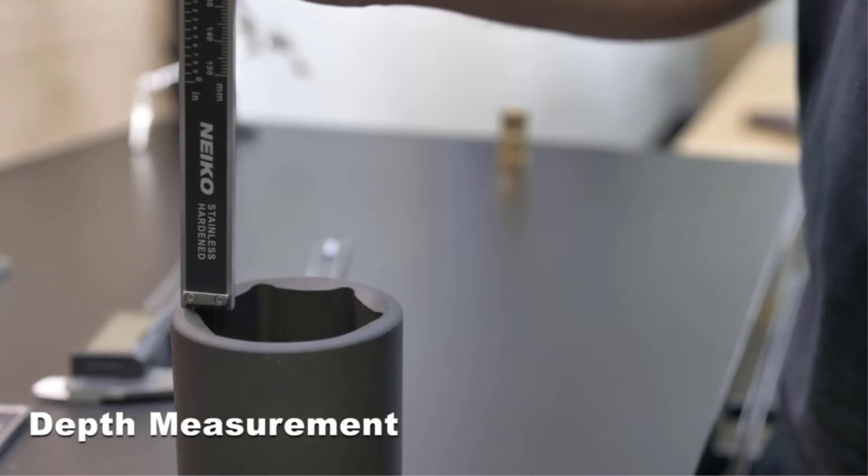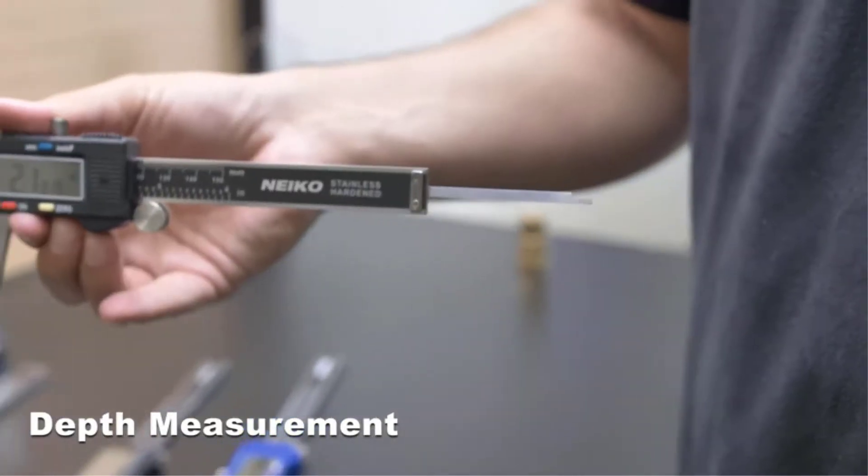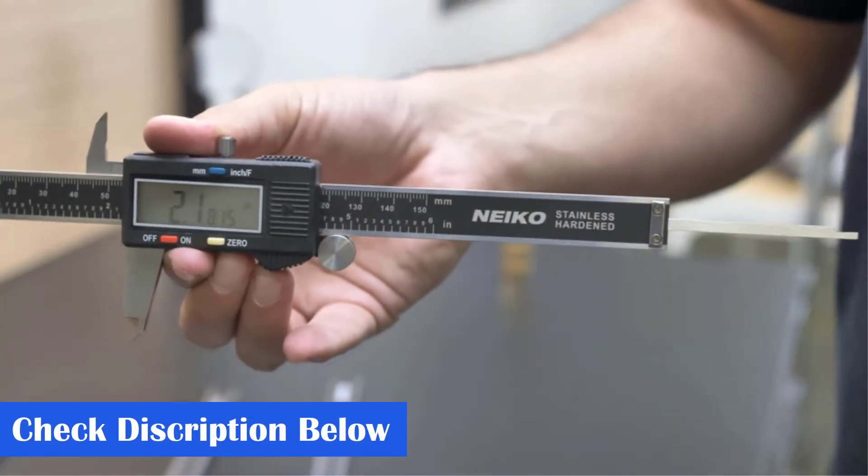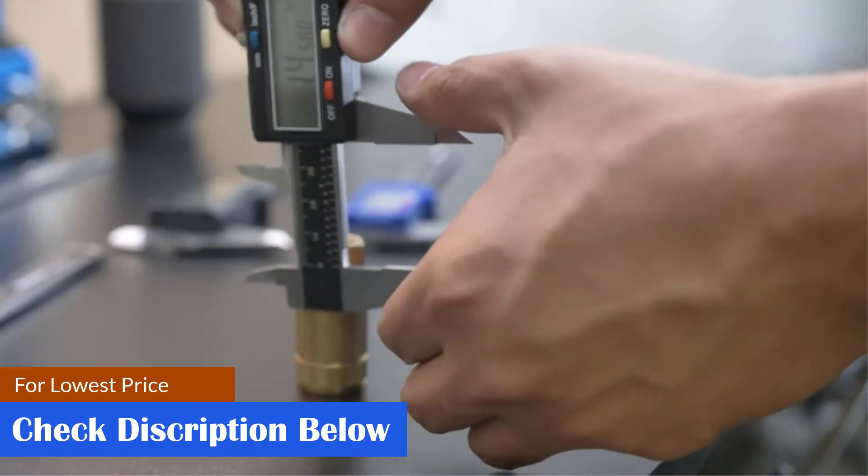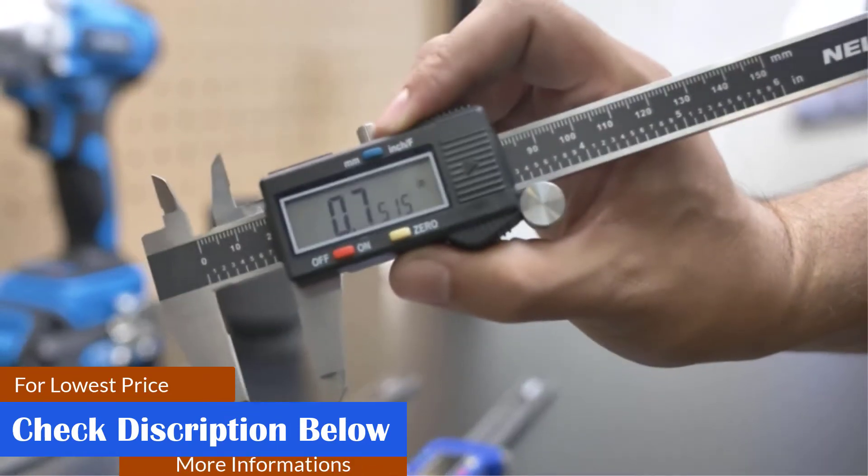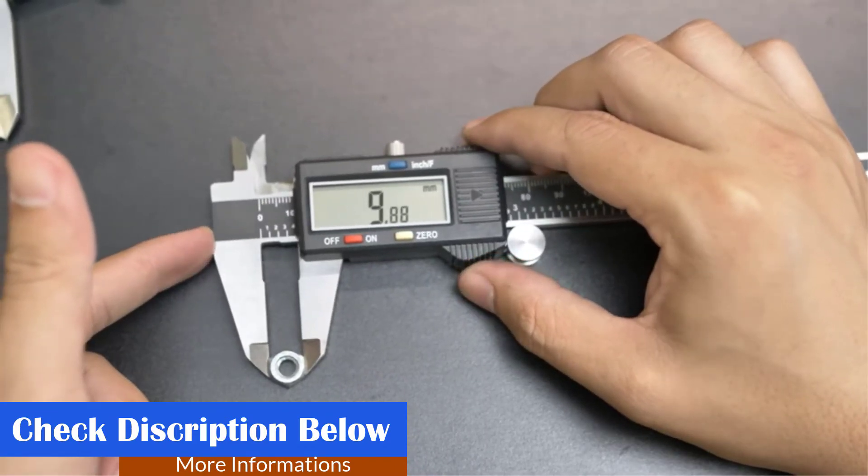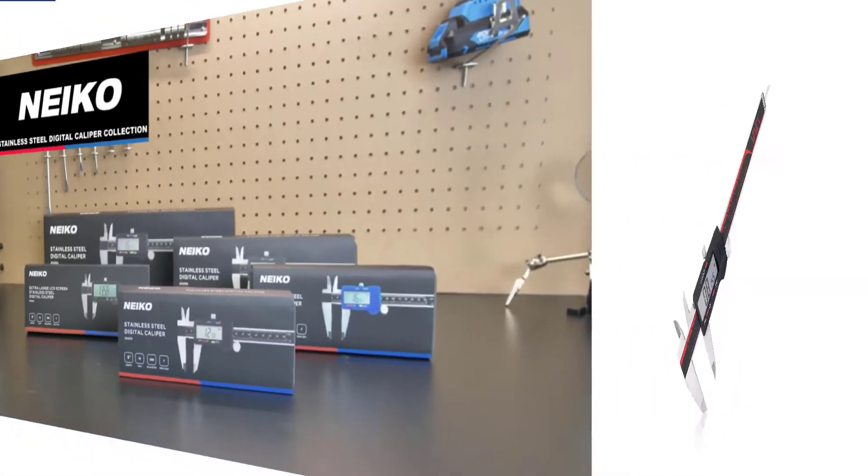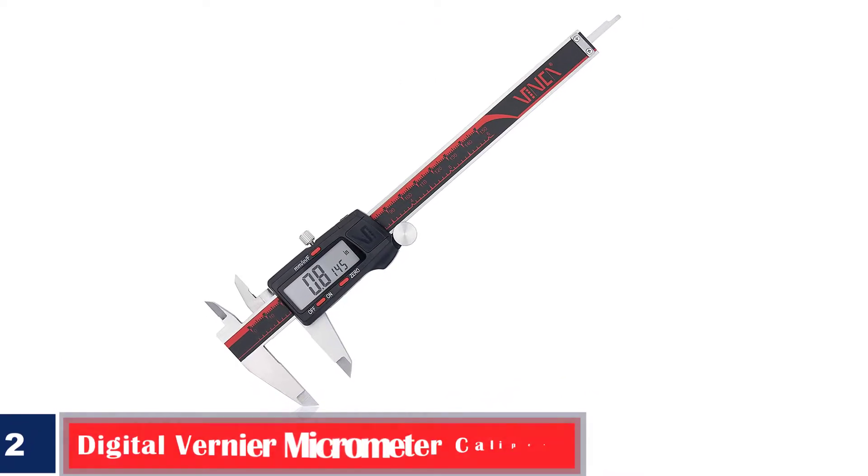Pros: Easy battery-powered operation, multi-functional, long-lasting, knurled thumb roller, locking screw, portable. Cons: Battery may drain out quickly.